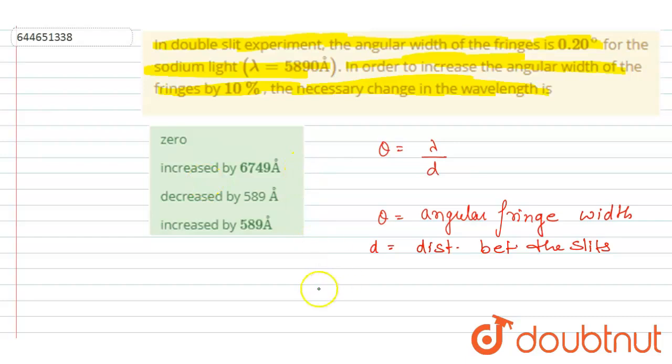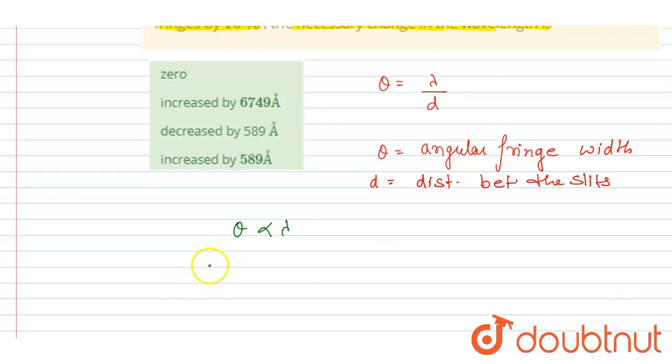If you see, the theta, the angular fringe width, is directly related with the wavelength. So if I want to increase the fringe width by 10%, then I have to increase this lambda also by 10%.